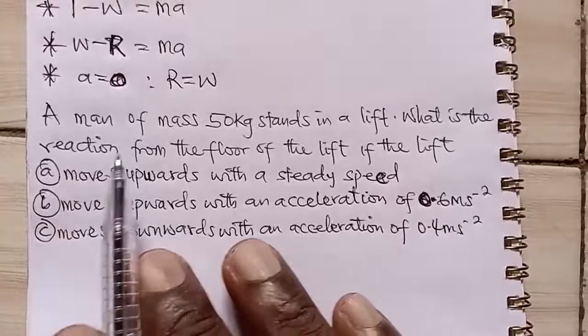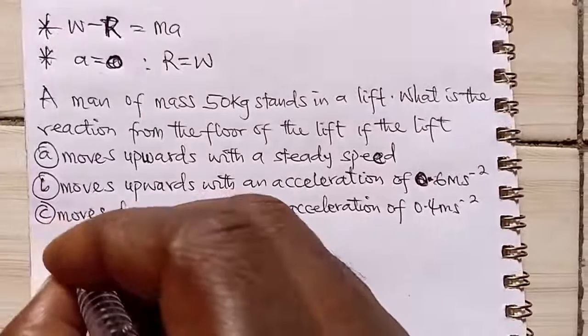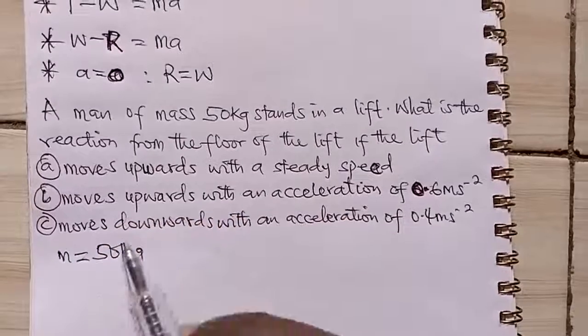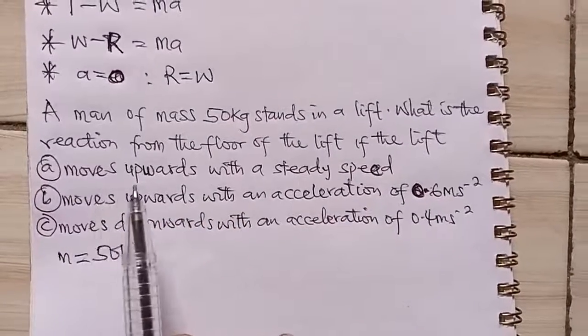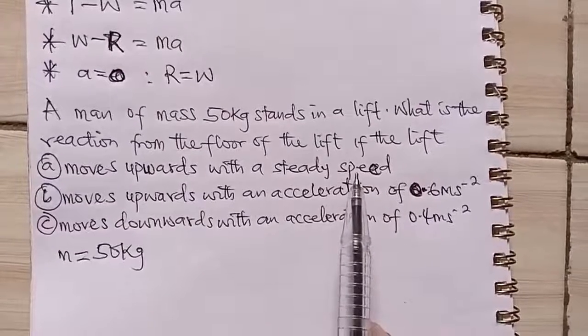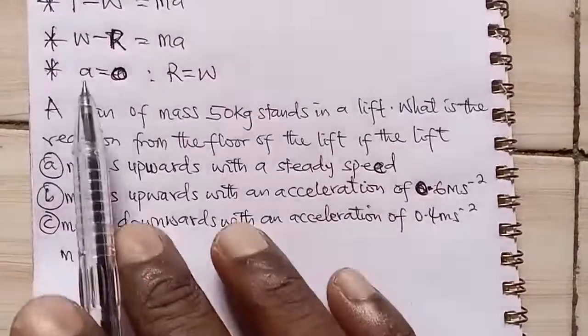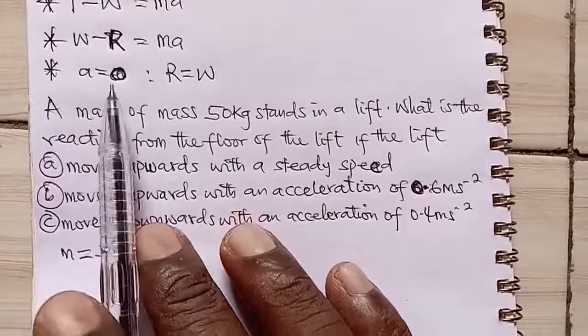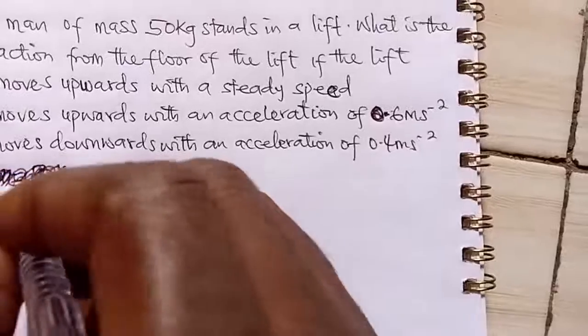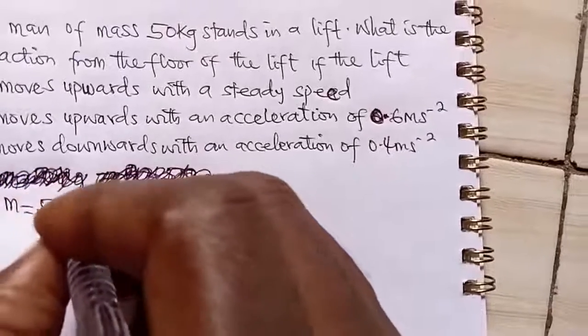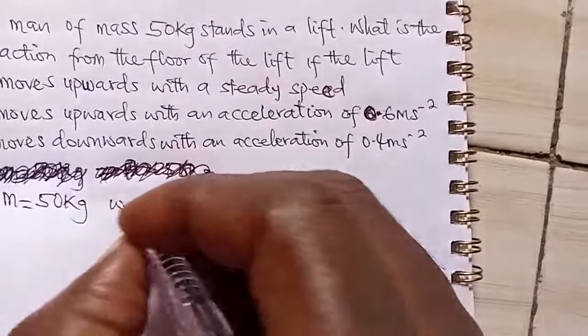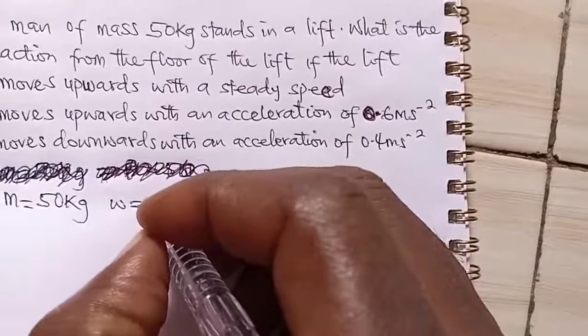The first one, we are told that mass m is 50 kg. And we are told that it's moving upwards with a steady speed. Remember that one of the conditions is that whenever the lift is moving with steady speed, acceleration is 0. And when acceleration is 0, it means that a equals 0. So since mass is 50 kg, remember that for us to get W, W is giving us mg.